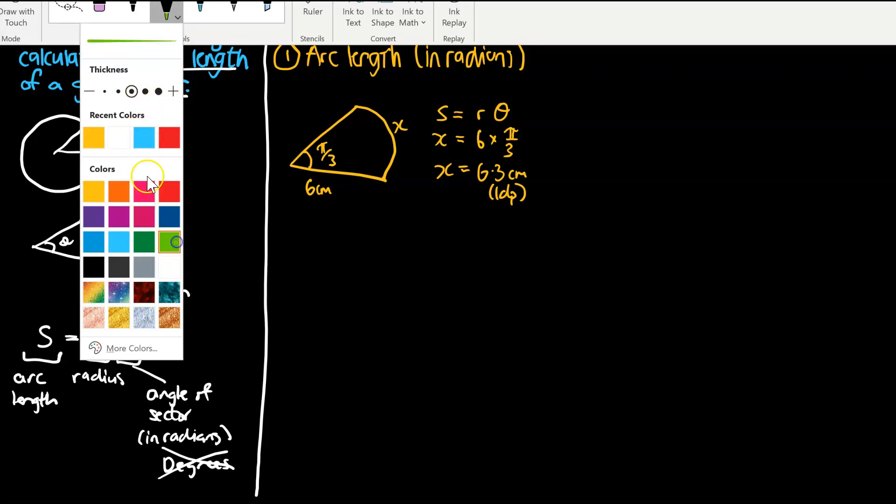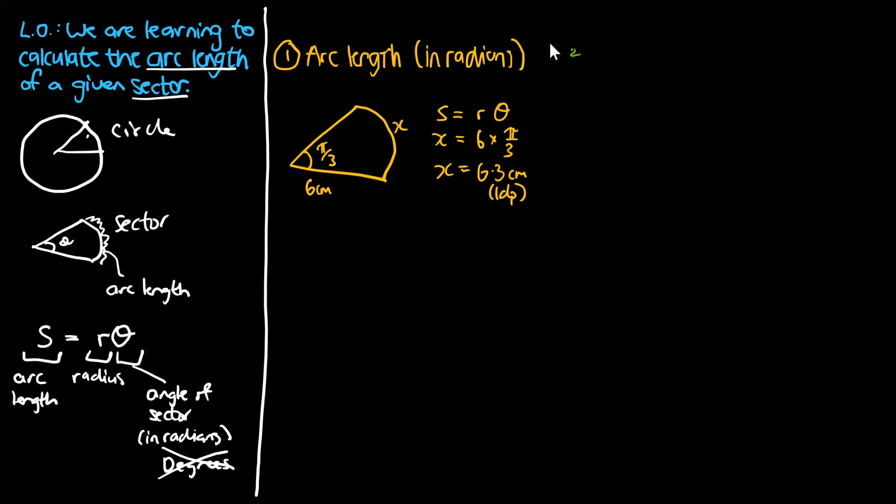Let's change pen colors. We're now going to look at question two. We're now going to deal with arc length, but this time we're going to be given degrees. We've got a skinnier one this time around. Let's say that there is 45 degrees. We've been told it has a radius of 7.5 centimeters. And we're trying to find out how long the arc length for x is.